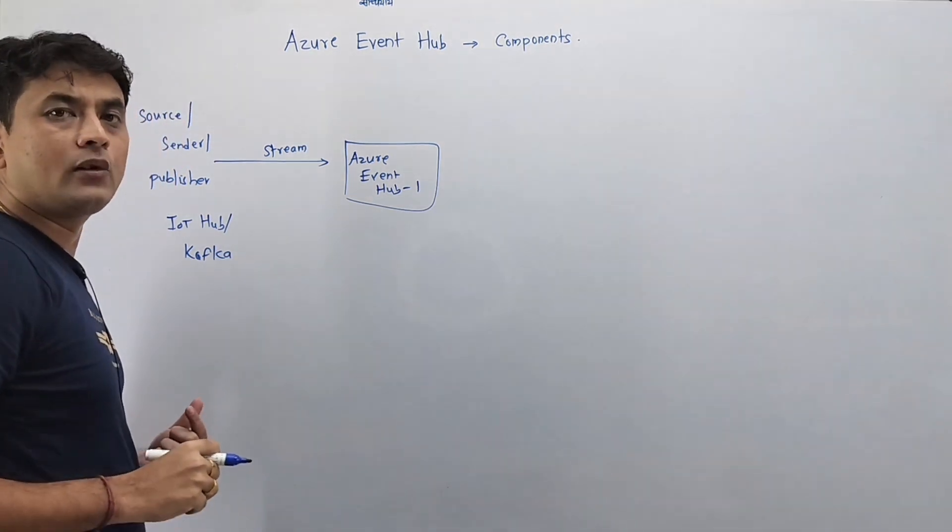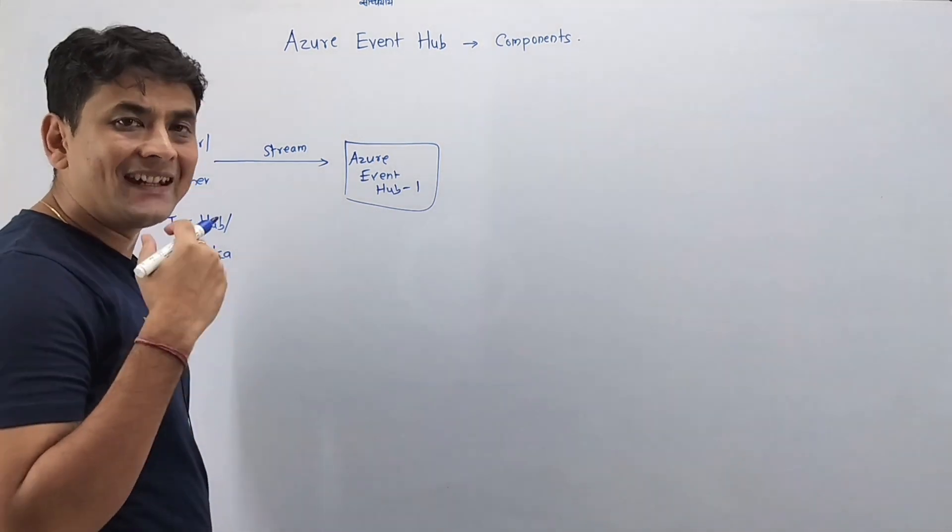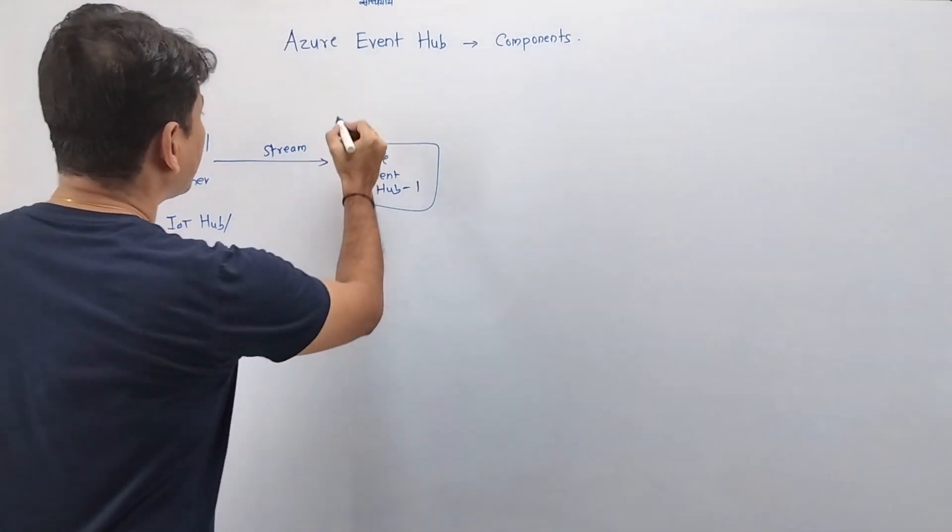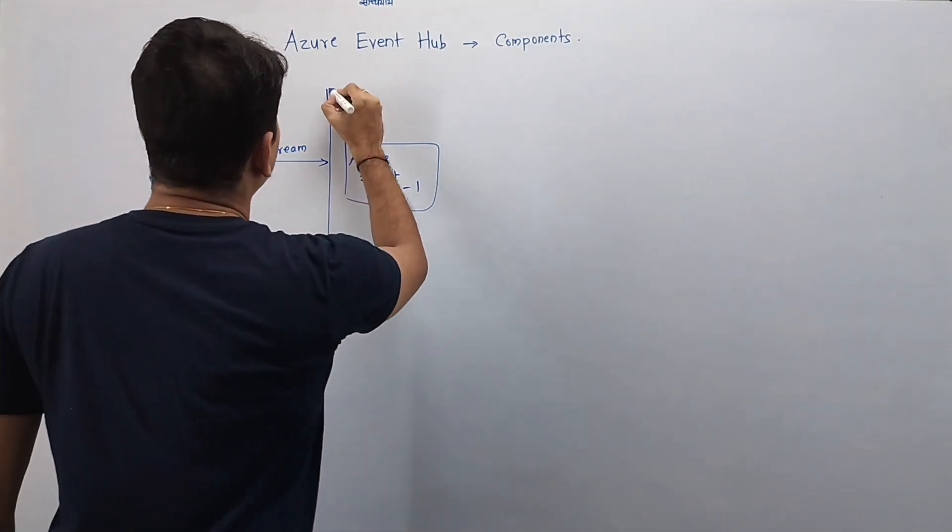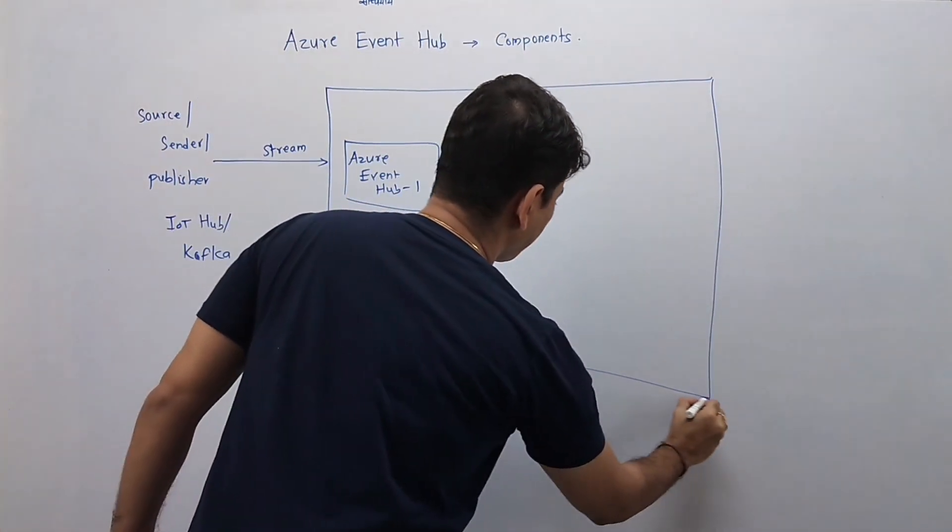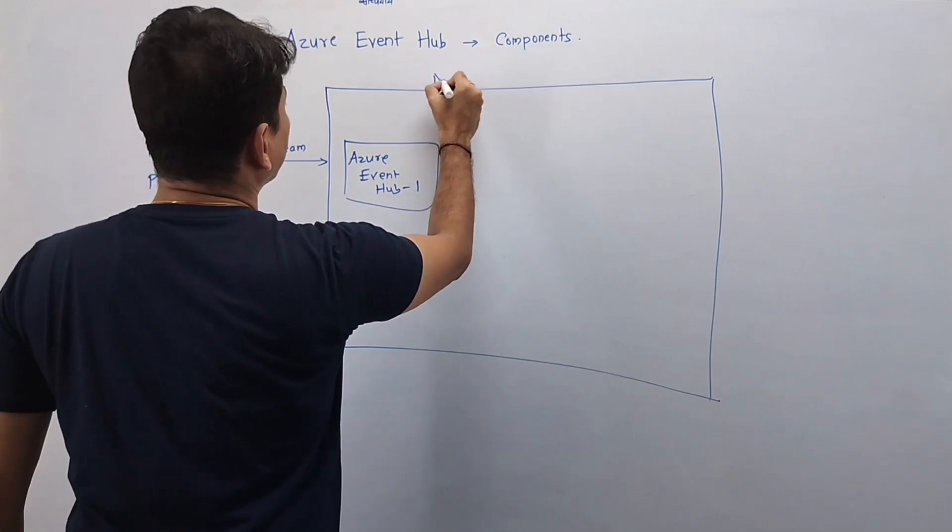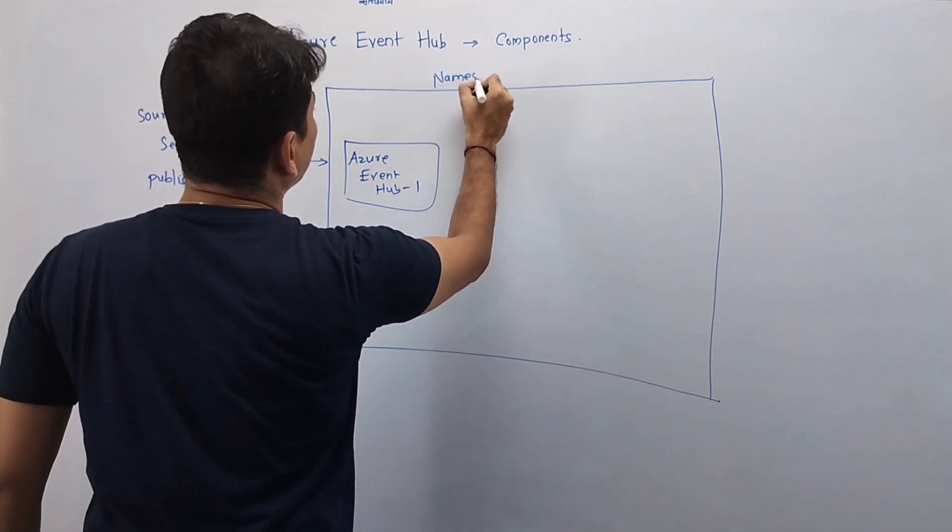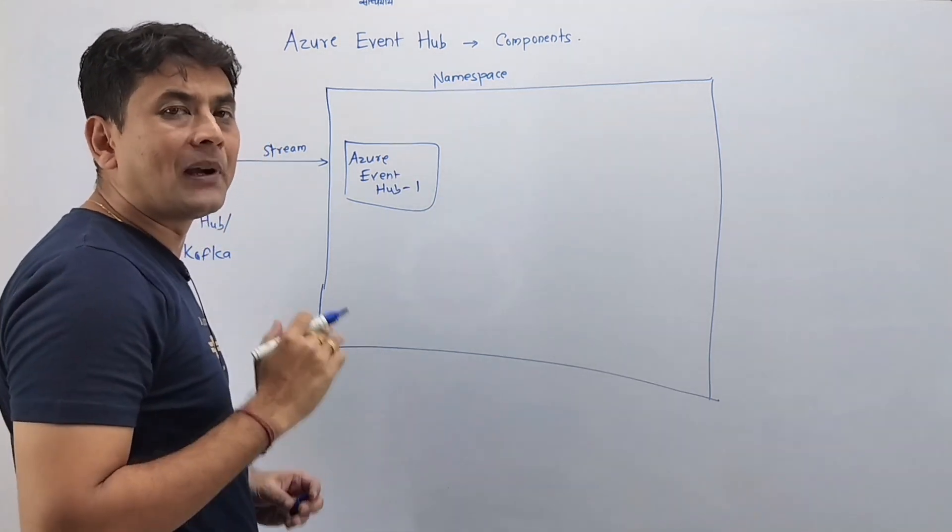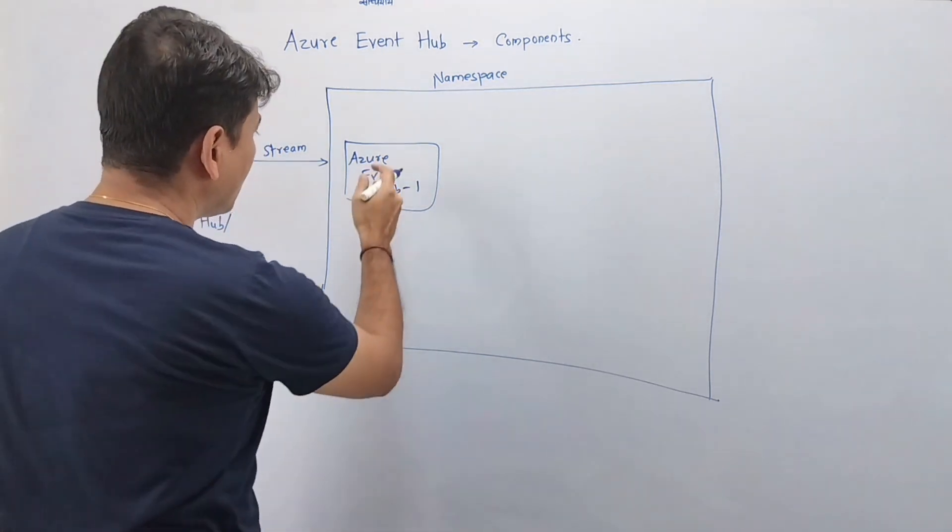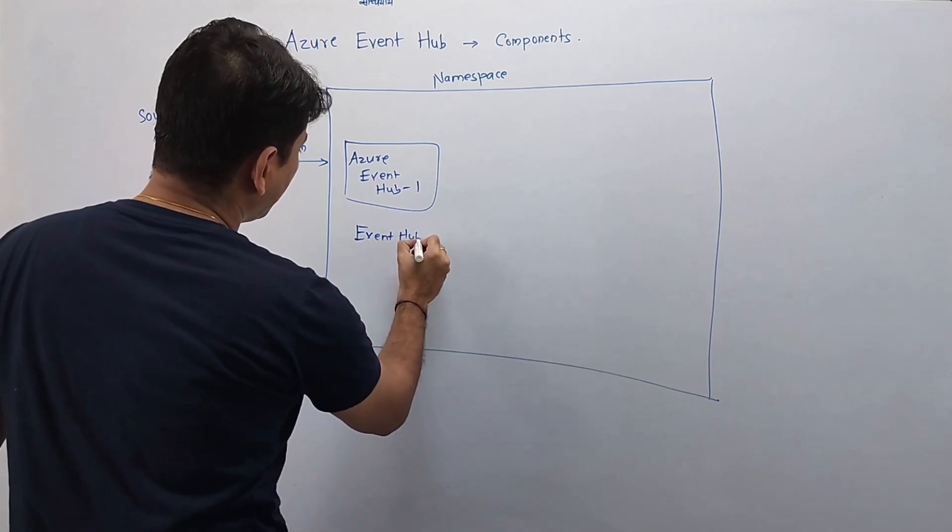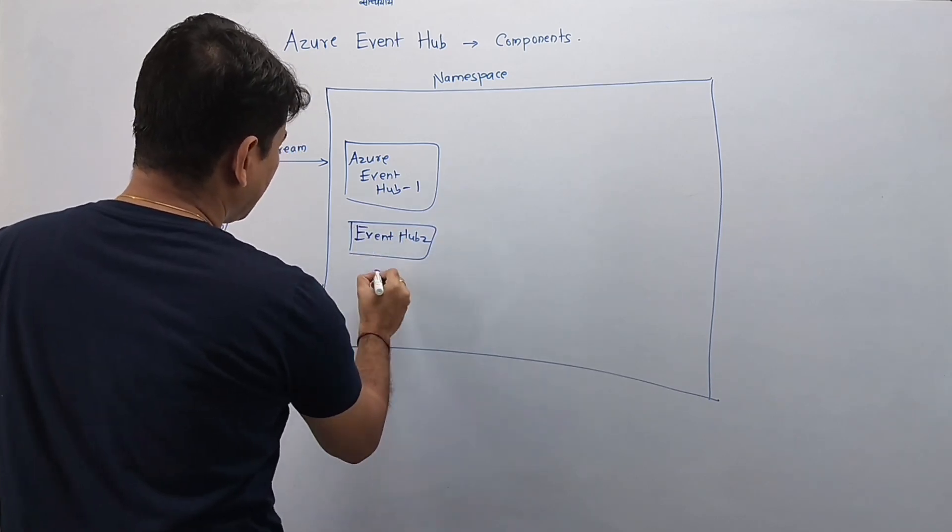Now this Azure Event Hub, it will be present in namespace. So namespace is a container for Event Hub. So we will have this namespace over here like this. And a namespace can contain multiple Event Hubs - Event Hub 1, Event Hub 2, like that.